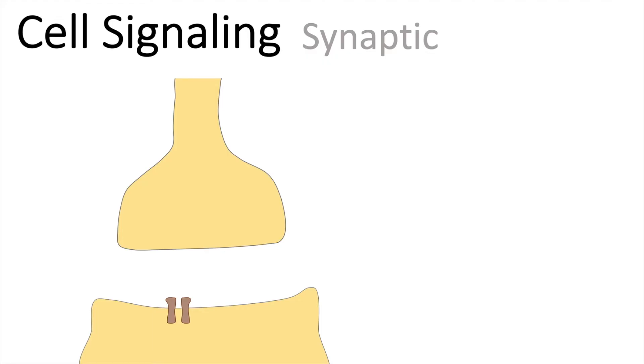The last type of signaling I want to show you is synaptic signaling. In this case, we are talking about neurons and neurotransmitters. The upper part here is the terminal axon. It's also called the presynaptic neuron. The part on the other side is called the postsynaptic neuron and in between we have the synaptic cleft.